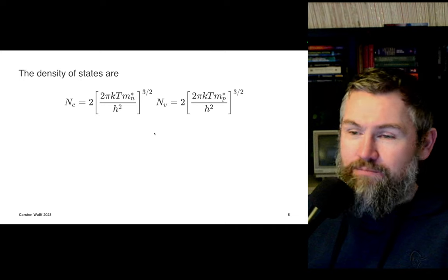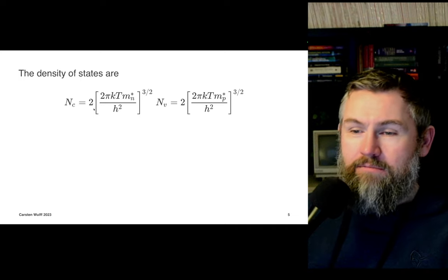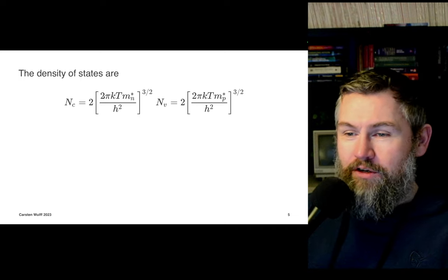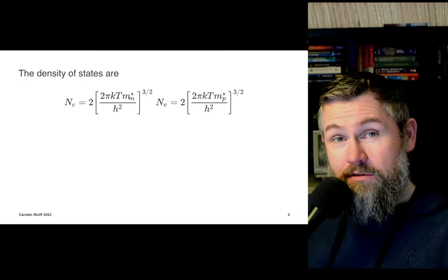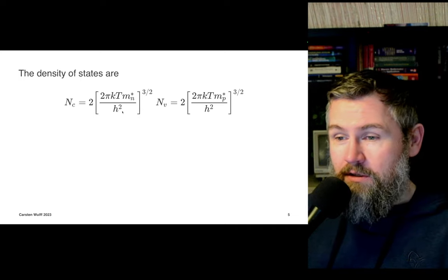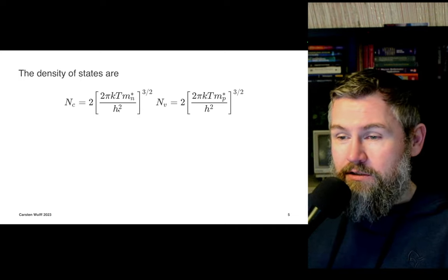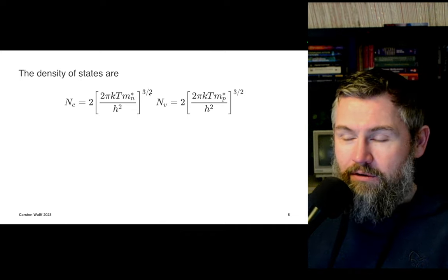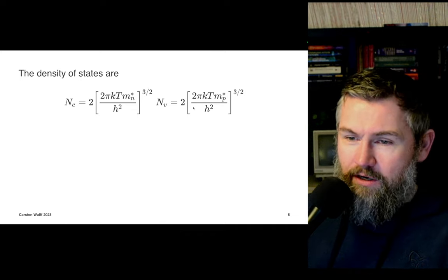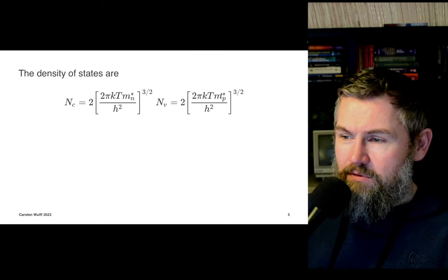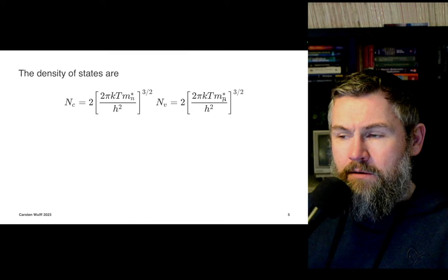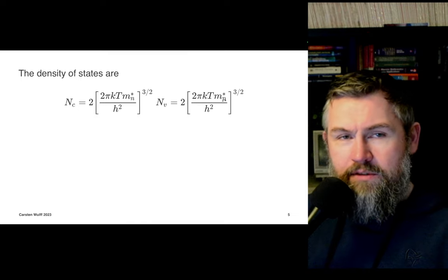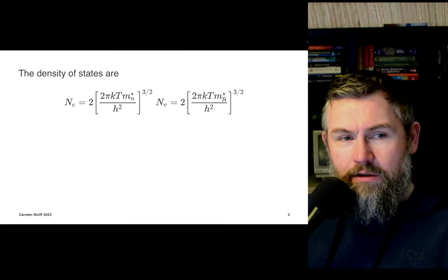The density of states is given by: 2 times (2πkT m*)^(3/2) divided by h², to the power of 3/2. For holes it's similar - the only difference is the effective mass of holes. But what does this mean and where does it come from?